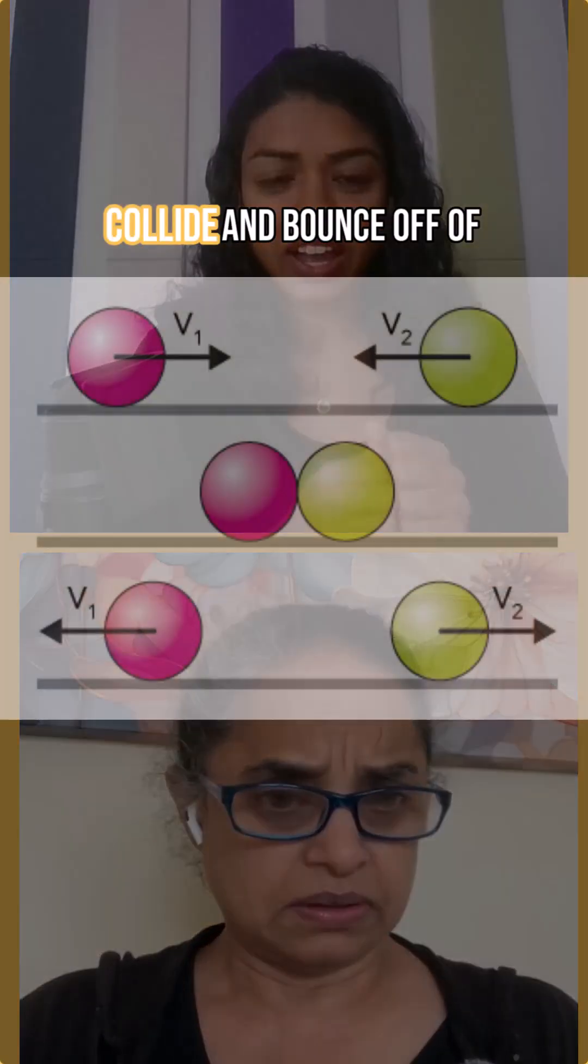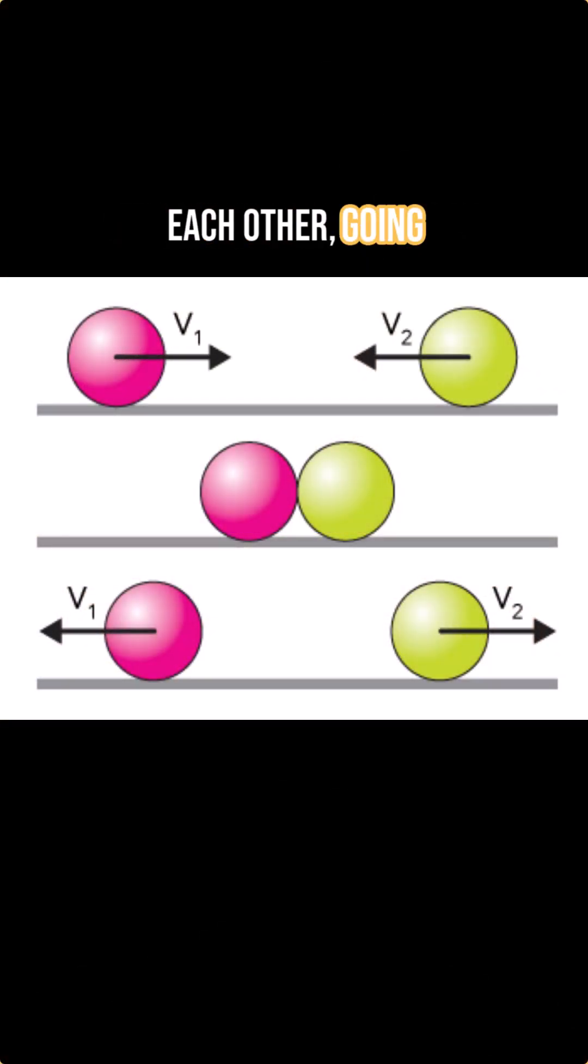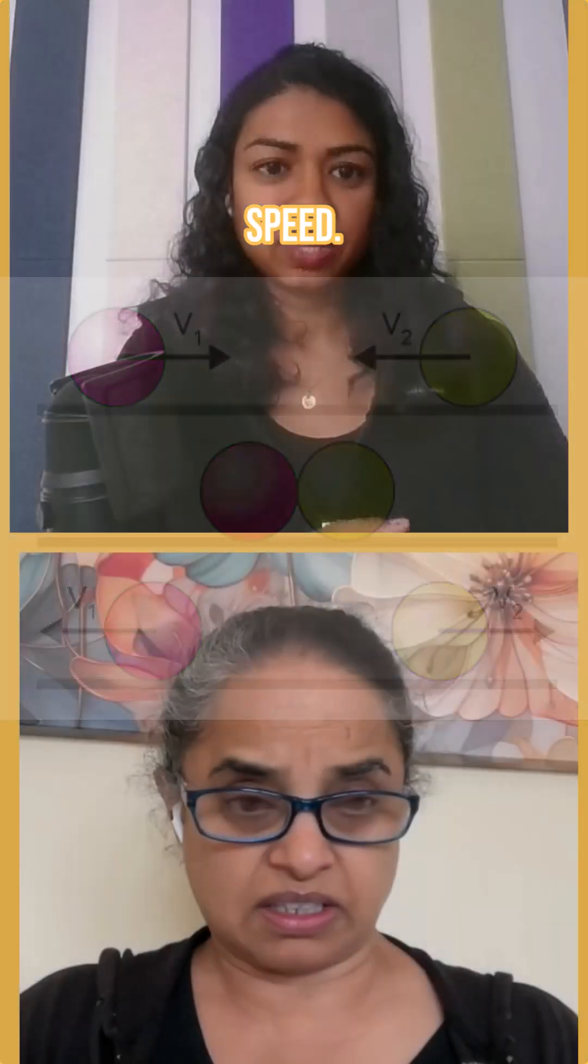In a perfect world, the two objects would collide and bounce off each other going in opposite directions, but at the same speed they were initially. Correct.